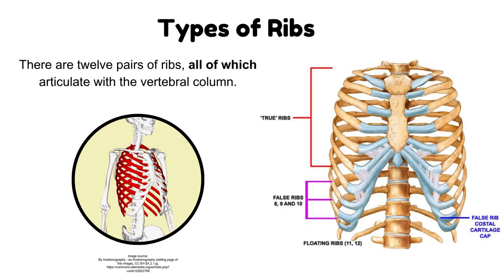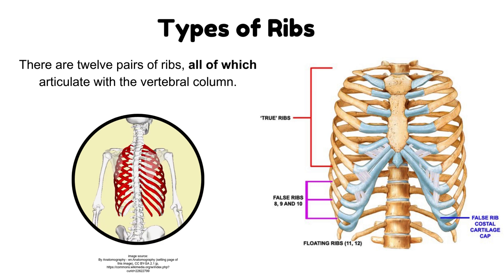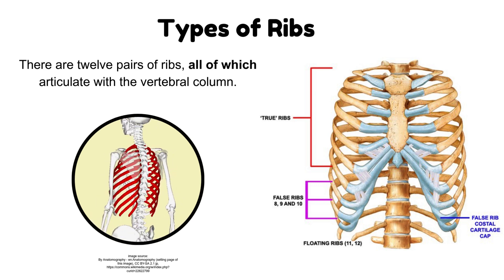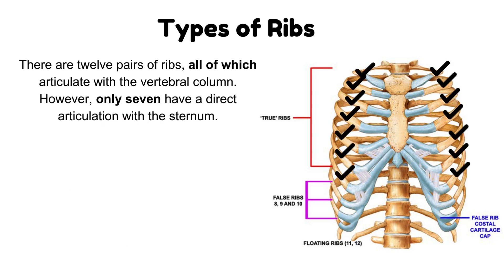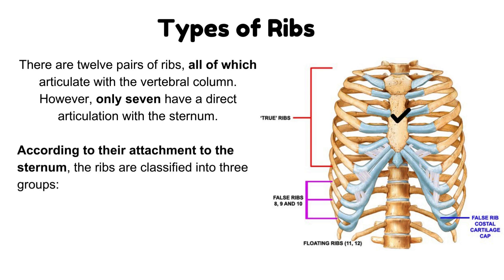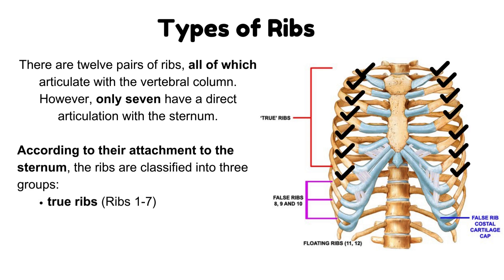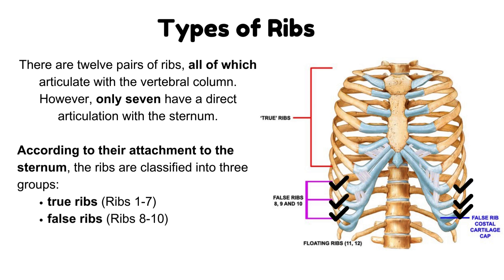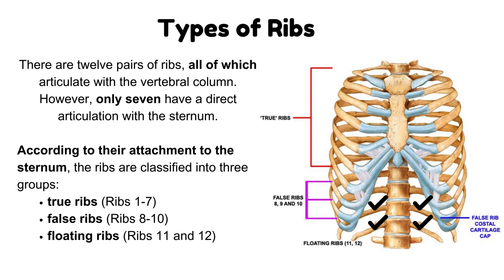Types of ribs: there are 12 pairs of ribs, all of which articulate with the vertebral column. However, only seven have a direct articulation with the sternum. According to their attachment to the sternum, the ribs are classified into three groups: true ribs (ribs 1 to 7), false ribs (ribs 8 to 10), and floating ribs (ribs 11 and 12). We will discuss them one by one.